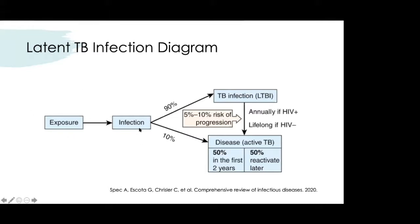After exposure and infection, 10 percent of people will have active tuberculosis. Among those who do get active tuberculosis initially, 50 percent will develop it within the first two years of exposure, whereas the other 50 percent will reactivate later in their life.